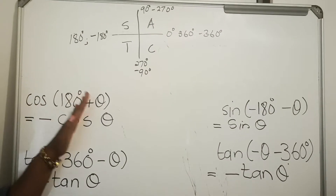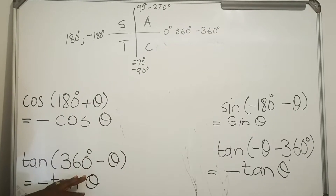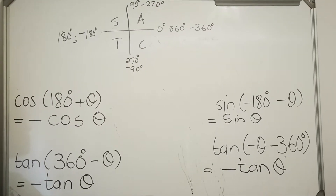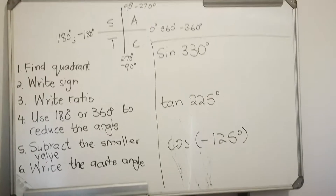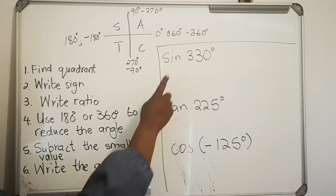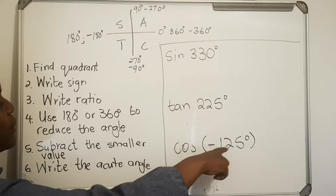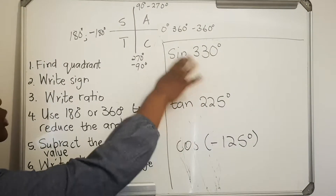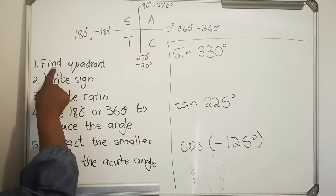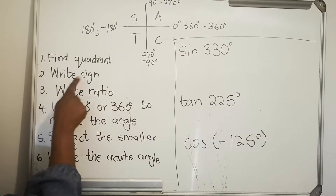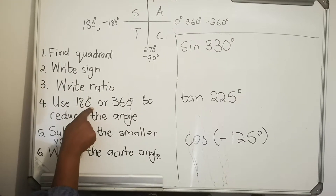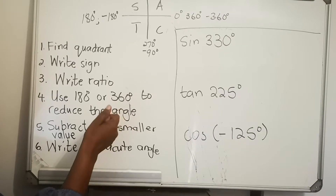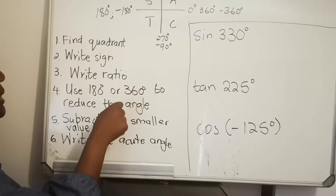That's how you do reduction formula with positive angles and negative rotation. Now we want to look at doing reduction formula with numerical values — meaning actual numbers. When you have sin 330, tan 225, and sin negative 130, these are angles that are not acute angles. You're going to follow these steps: find the quadrant, write the sign, write the ratio, and then use 180 or 360 to reduce the angle.